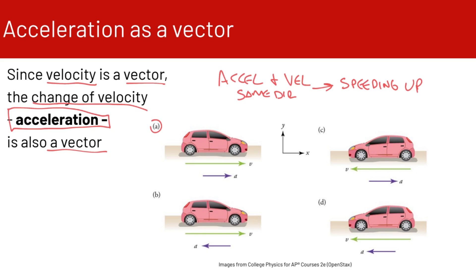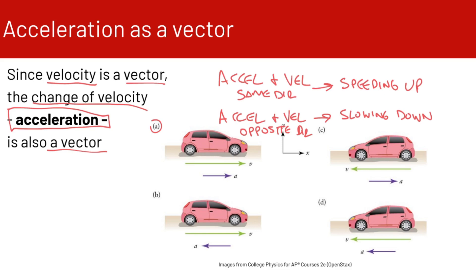In B, the velocity vector is pointing to the right and the acceleration vector is pointing to the left. When the acceleration vector and the velocity vector are pointing in opposite directions, the object is slowing down. Because the acceleration vector is pointing in the opposite direction of motion, the car is slowing down.